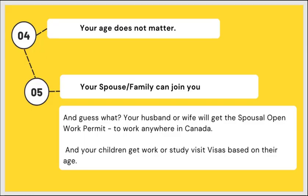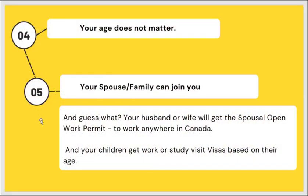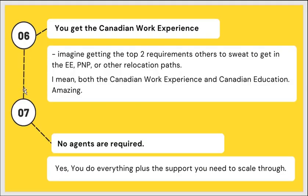Number four reason: your age does not matter. No matter your age, you can use the study route to relocate to Canada. Number five: your spouse and family can join you. Your husband or wife will get the spousal open work permit to work anywhere in Canada while you are studying. Your children will get work or study visas based on their age — if 18 and above they get a work visa, and if under 18 they get study visas.